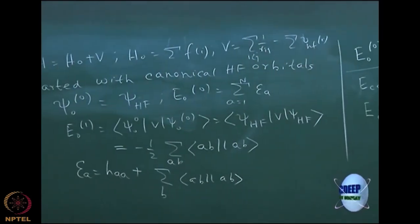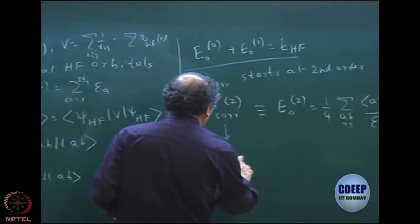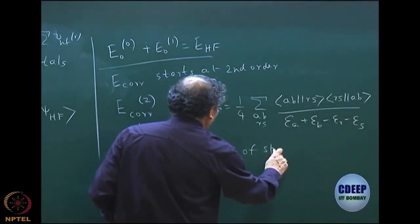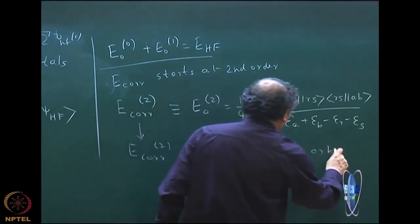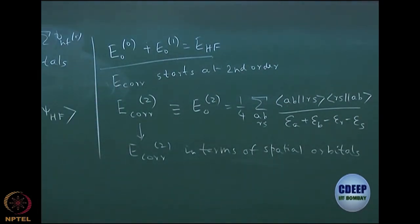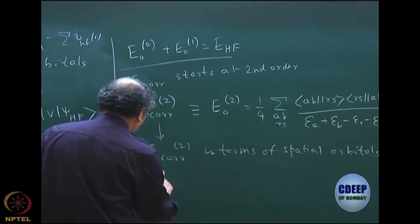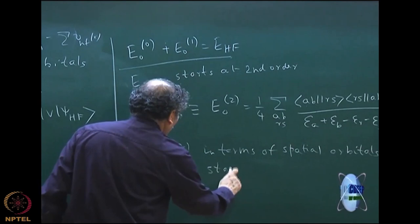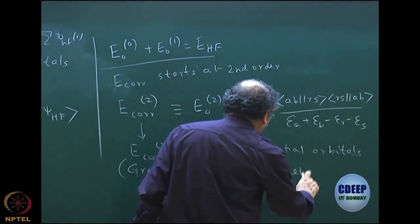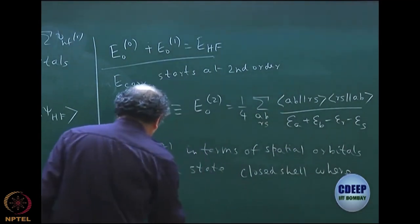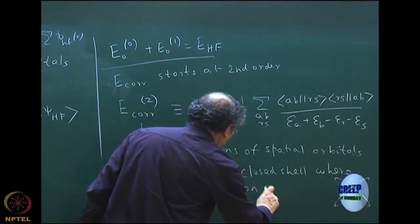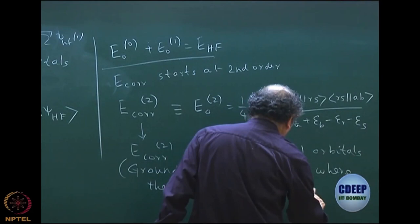The goal is to eventually get the correlation energy in terms of spatial orbitals, both for the occupied and virtual orbitals. Remember the entire derivation is done for the ground state of a closed-shell system, where the eigenfunction of H₀ is a single determinant.